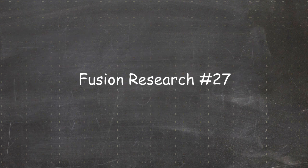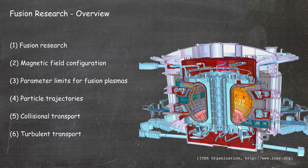Hello everybody and welcome to video number 27 of the online version of the fusion research lecture. We are in chapter 5, collisional transport, and in the last video we started to look into neoclassical transport — that is transport in a toroidal geometry due to a toroidal magnetic field — and we looked only at transport resulting from passing particles.